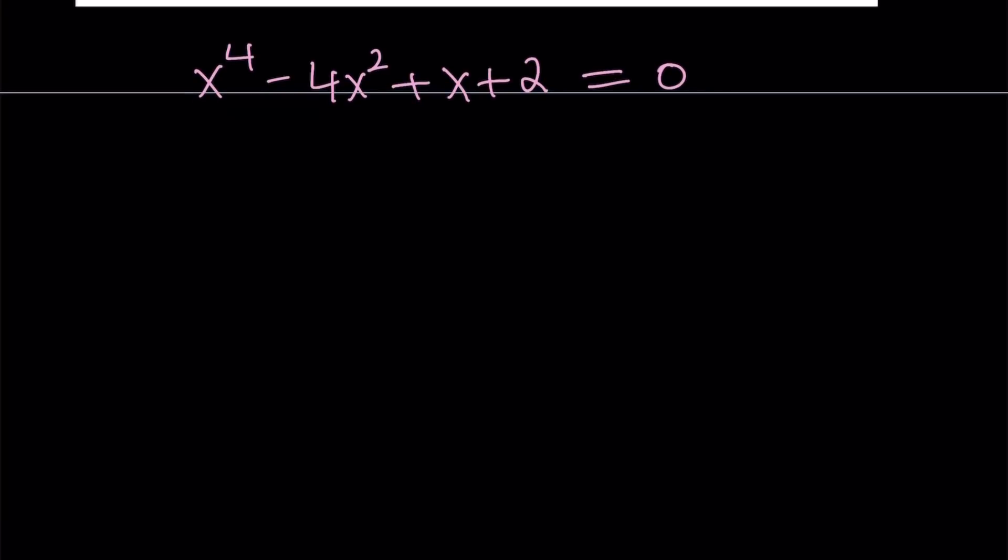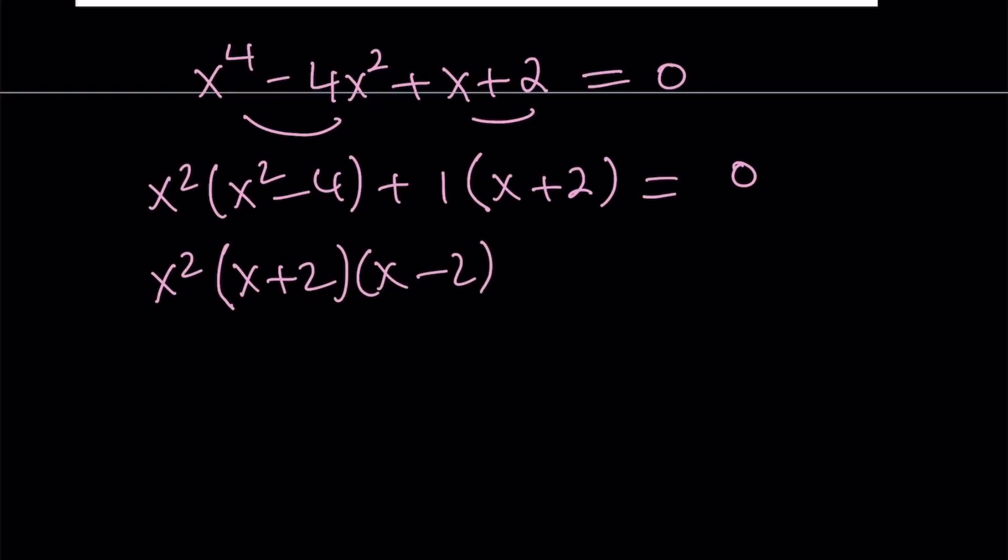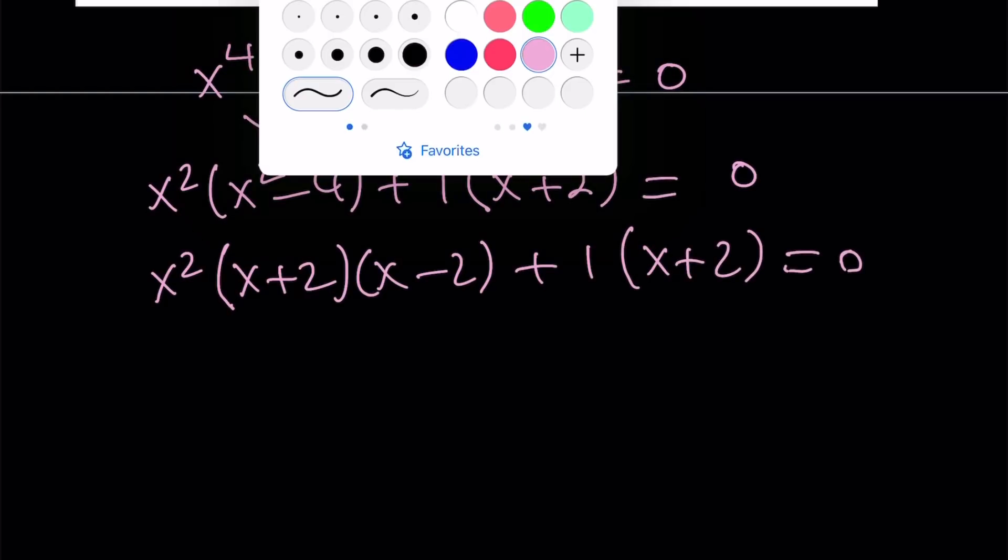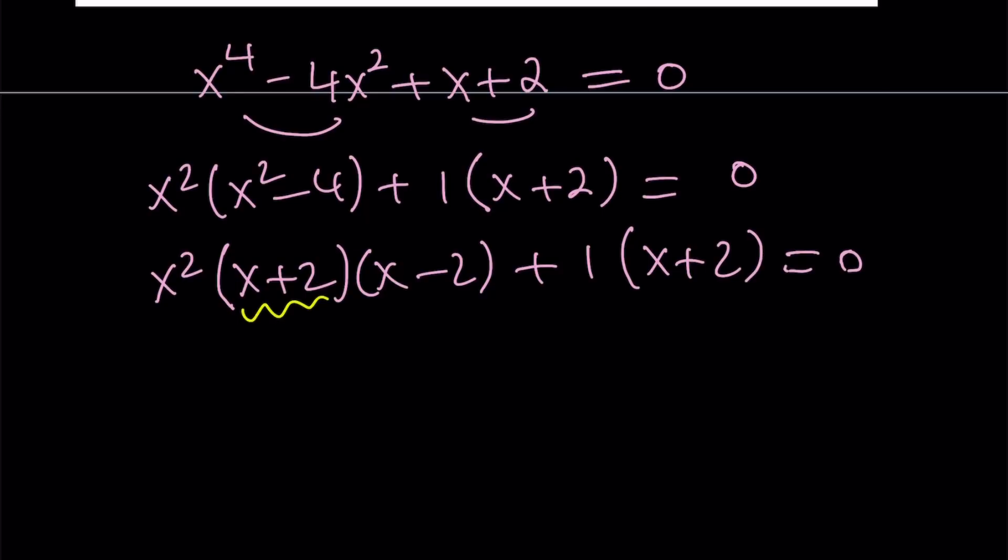Let's take a look. I'm going to group these terms into two groups: x squared times x squared minus 4, and I'll just take out a 1, x plus 2. Okay, great. So x squared minus 4 is factorable by difference of two squares, and now this is where we are able to factor by using a common factor, which is x plus 2 in this case. So x plus 2 is a common factor. Notice that.